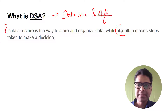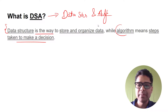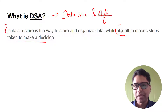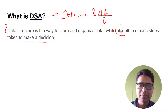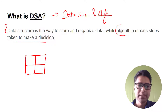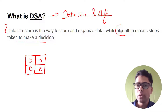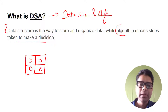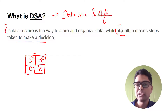Algorithm means steps taken to make a decision. We are talking about storing the data, and then algorithm is actually helping us make a decision. A simple scenario: we have a room with four cubicles. We want to store something, so we start here, then here, then here, then here. Once all four cubicles are full we can't store more. How we decide to store data in this fashion — first cube, second cube, third cube, fourth cube — that is going to be the algorithm.